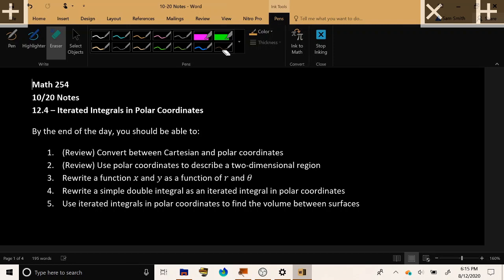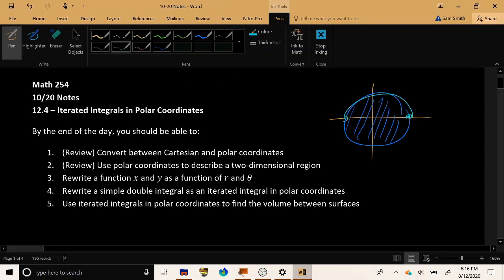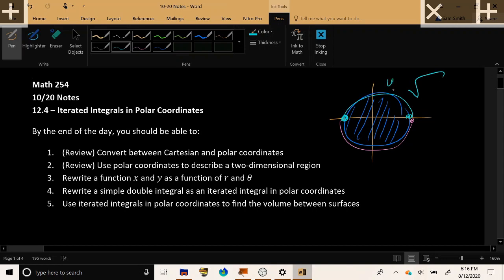This is especially useful when your region happens to be circular or semicircular. If you think about having to write the limits using Cartesian coordinates, you'd have to rely on equations and circles and things like that. This is just a quick example to motivate us.